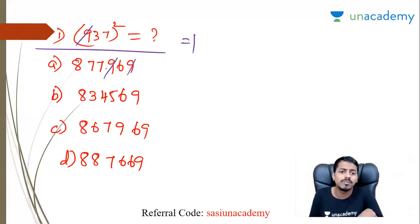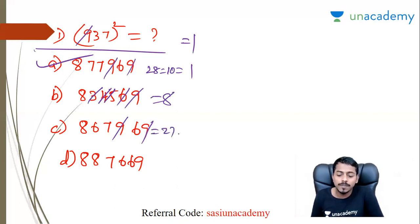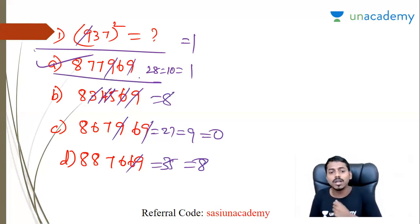First check: 9 is 9, any 9 just cancel. Next, 8 plus 7 equals 15, 22, 28. So condition satisfied, so option A. This is the unit digit method or digit sum method.